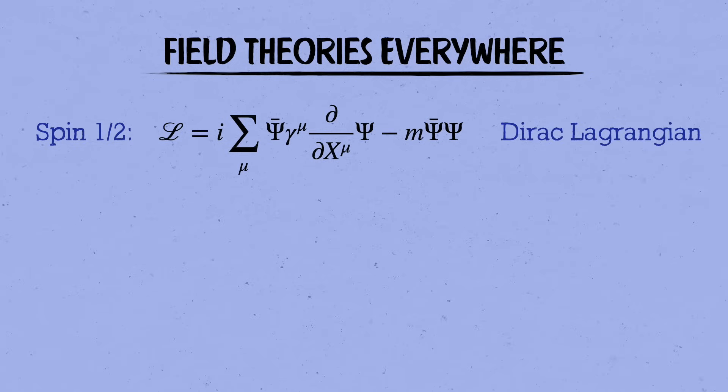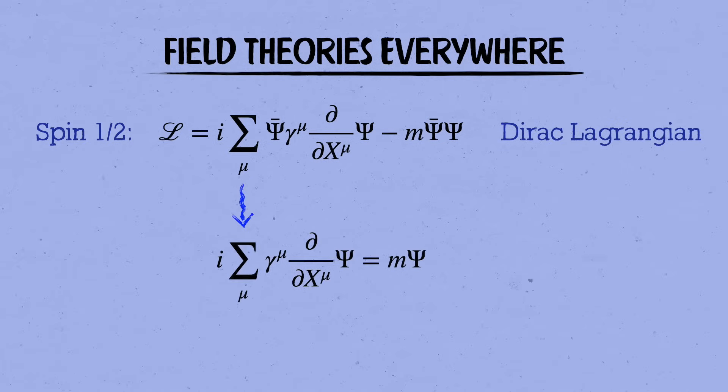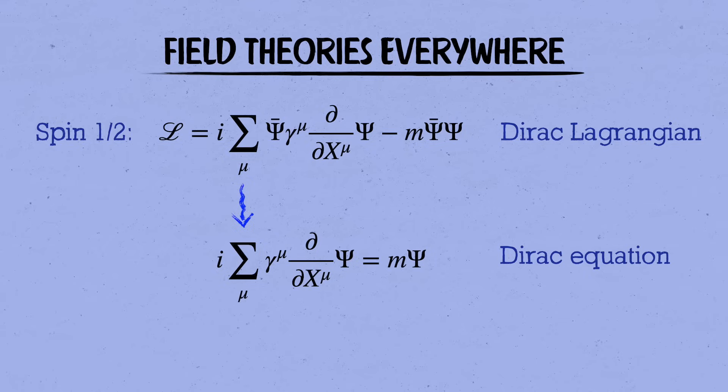The more familiar particles have different spins, like electrons with spin half and photons with spin one. These are described by their own fields with different Lagrangians and equations of motion. Spin half fields are described by the Dirac Lagrangian, which looks like this, and whose equation of motion is the Dirac equation. I won't explain what any of these symbols mean right now, I just want to give you a quick lay of the land of field theory. But if you're interested in learning more, please leave me a comment letting me know.